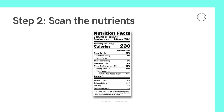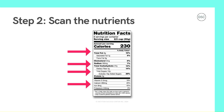Though calories might be helpful to know about depending on your nutrition goals, we likely want to pay more attention to the information listed below calories, including fat, carbohydrates, protein, cholesterol, sodium, and vitamins and minerals like vitamin D, calcium, iron, and potassium.